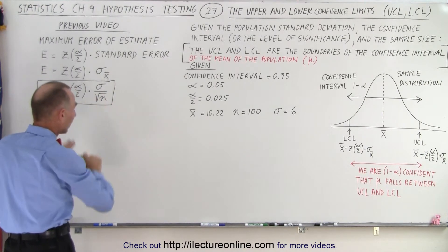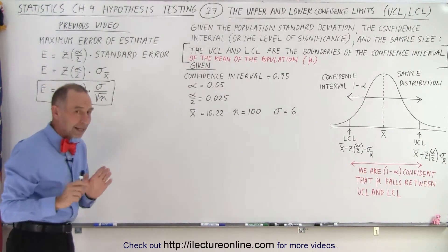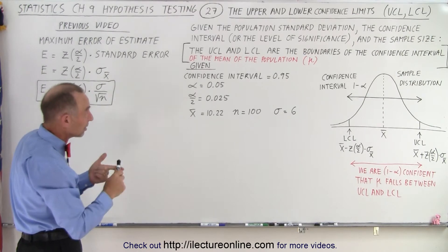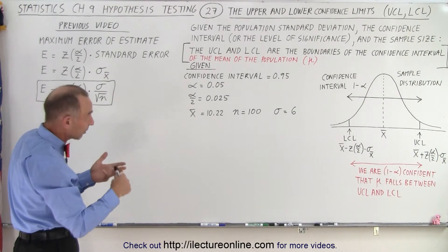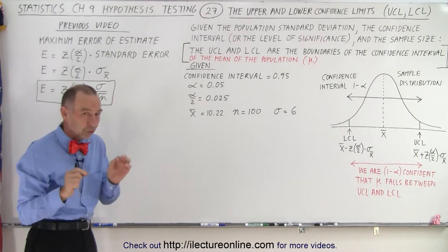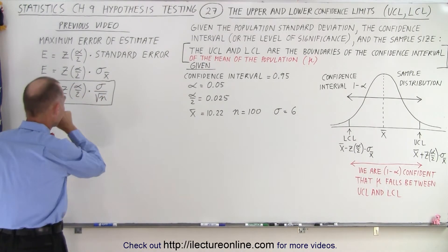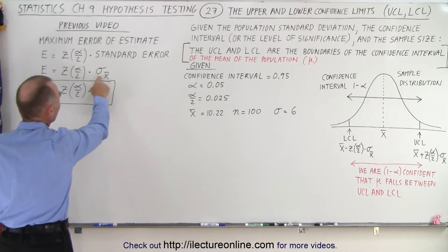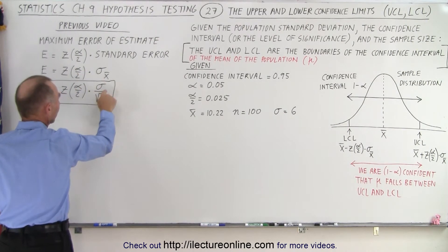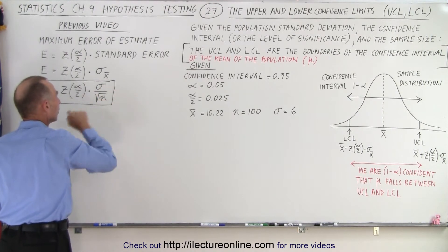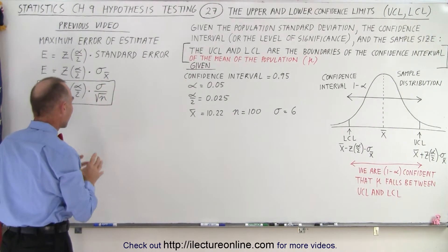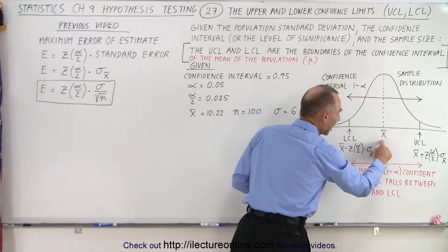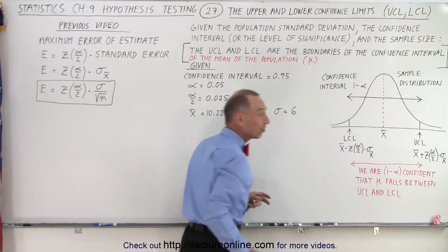We'll show you how to do that in just a moment. We're given the population standard deviation, the confidence level or level of significance, and the sample size — those go into this calculation. We also need the level of significance, the standard error (the standard deviation of the population divided by the square root of the sample size), and of course the sample mean.